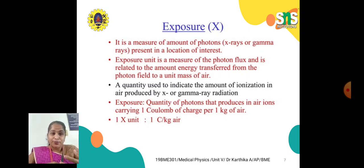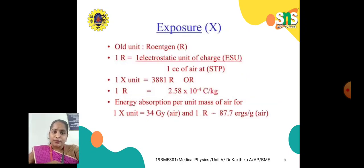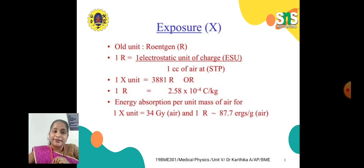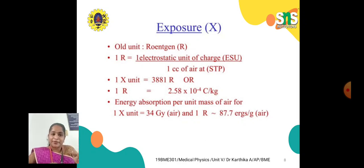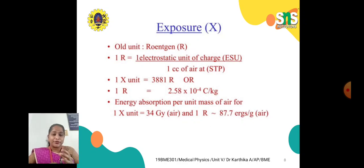One X-unit equals 1 C/kg in air. The older unit is Roentgen, represented as R. Here, 1 R equals 1 electrostatic unit of charge (ESU) per 1 cc of air at STP, and 1 X-unit equals 3881 R. Also, 1 R equals 2.58 × 10⁻⁴ C/kg. For energy absorption per unit mass of air, 1 X-unit equals 34 Gray in air and 1 R equals approximately 87.7 ergs per gram in air.